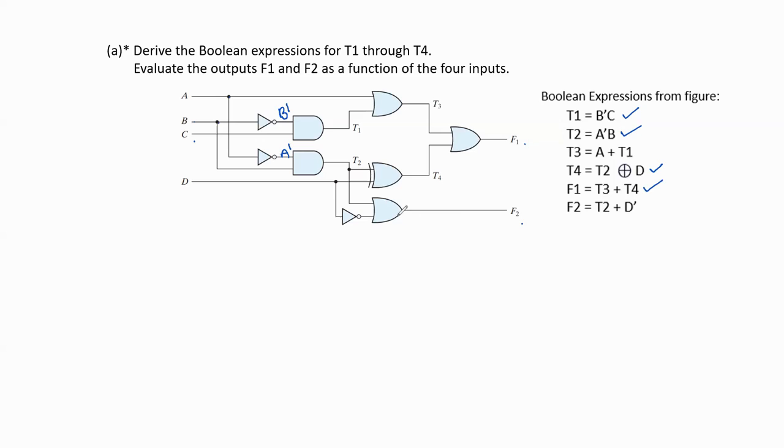For f2, it is an OR gate output where the inputs are t2 and d passing through a NOT gate, so f2 = t2 + d'.